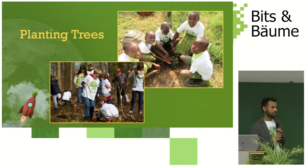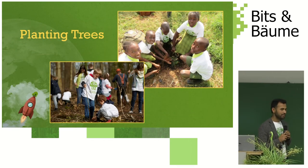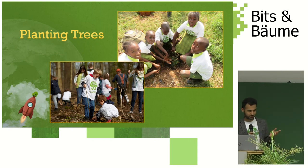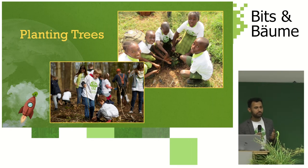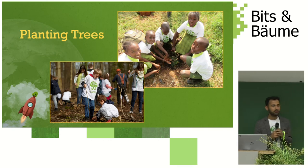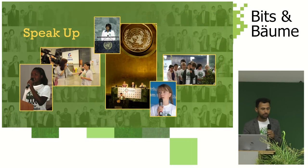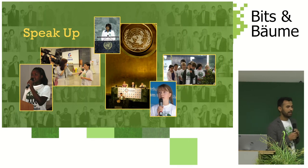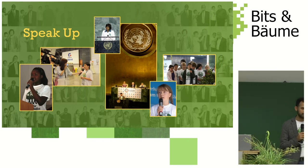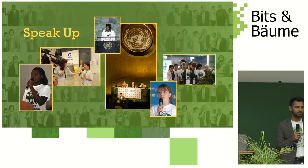Today there are over 80,000 Plan for the Planet ambassadors who are planting trees around the world. These are actions happening at grassroot levels. We also speak at different events and conferences and share the message of climate justice to the world.